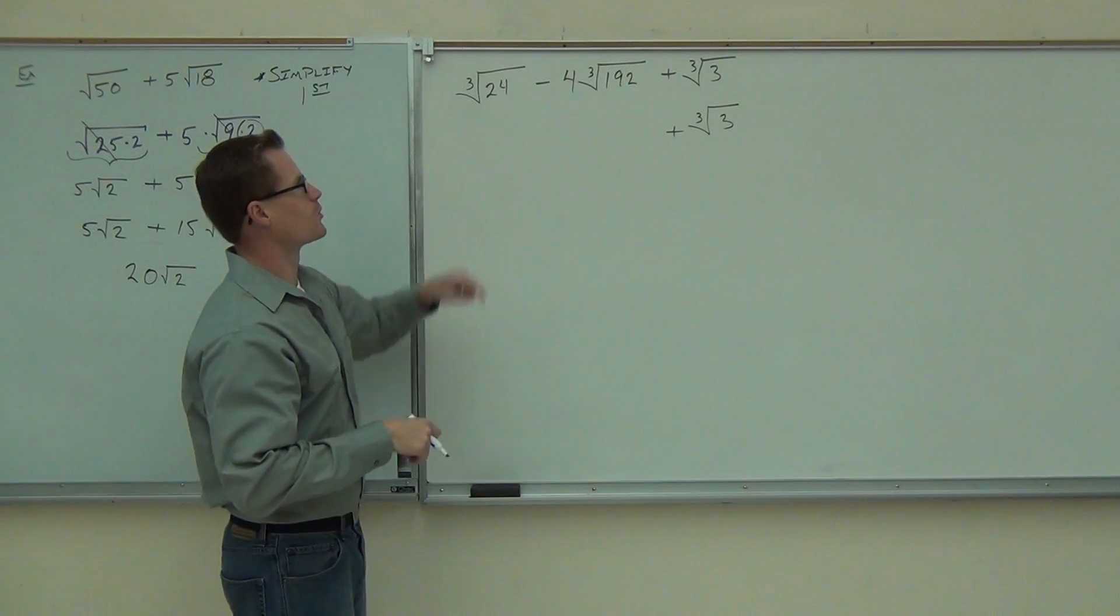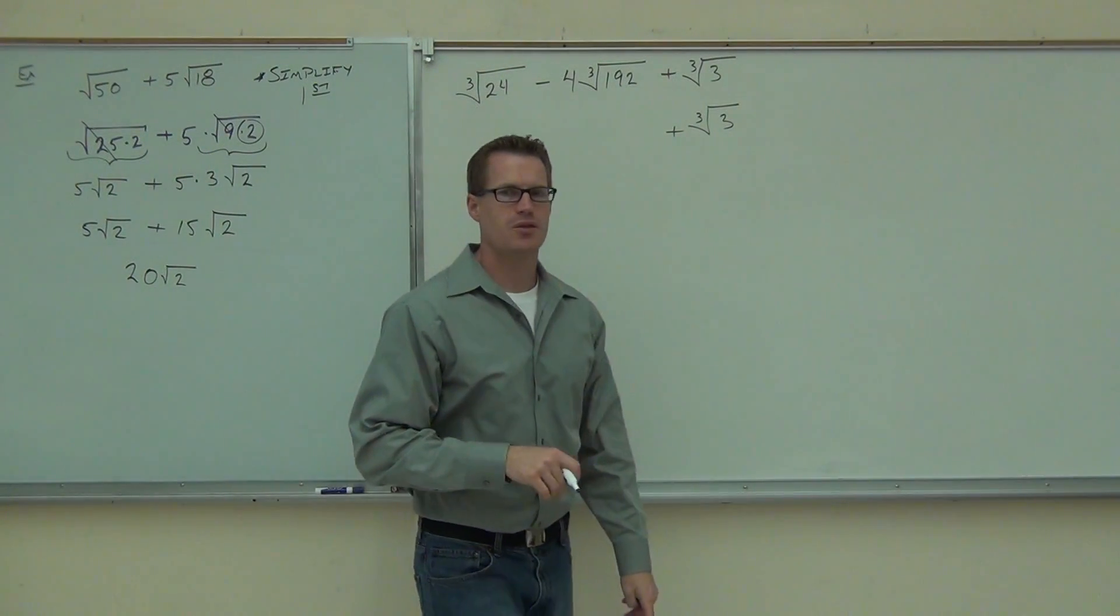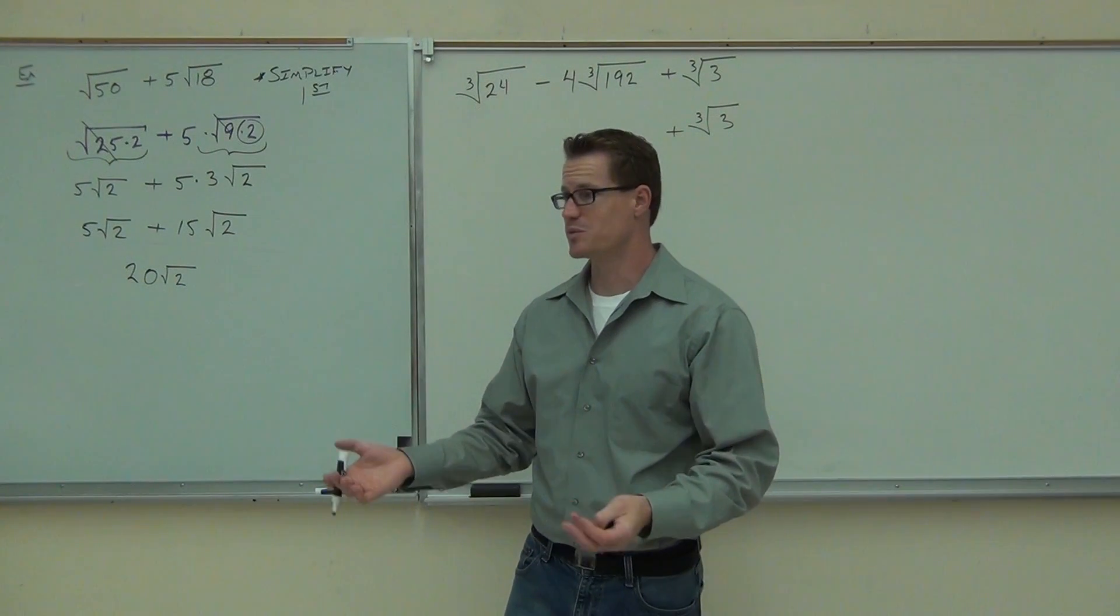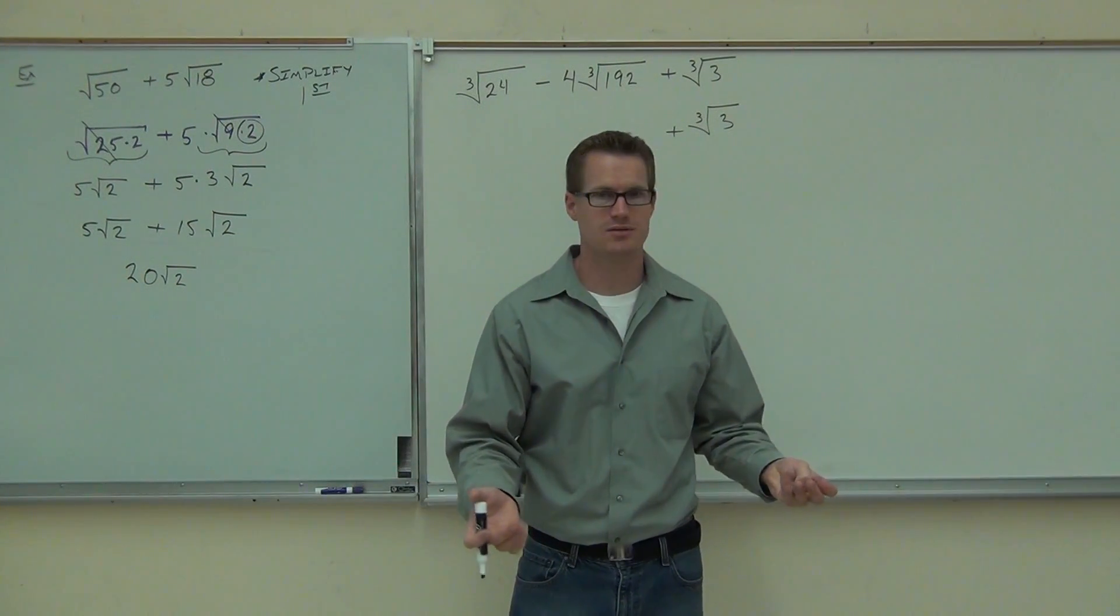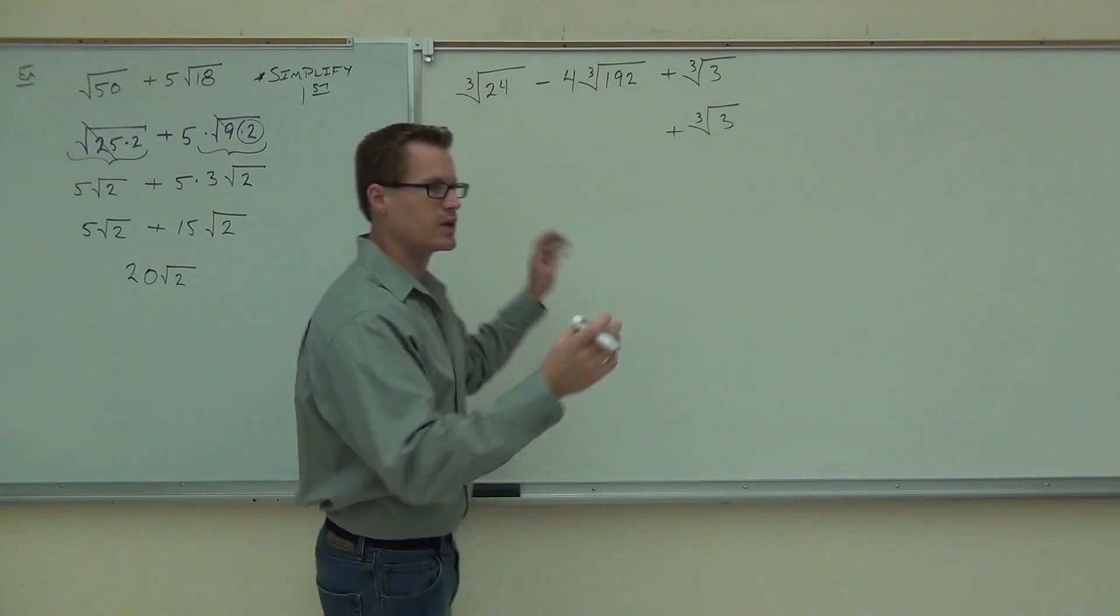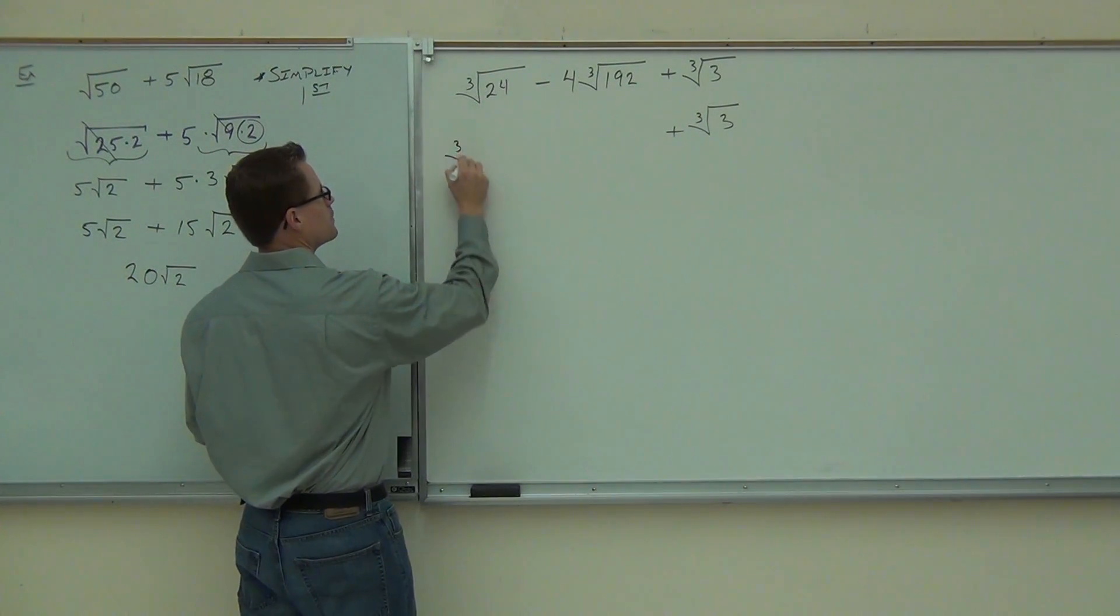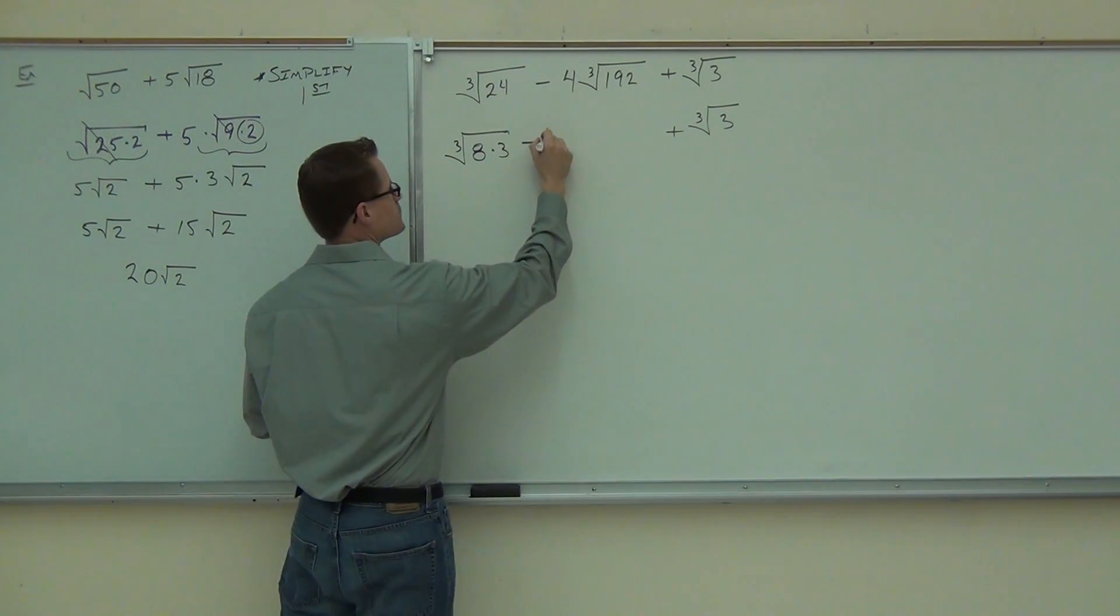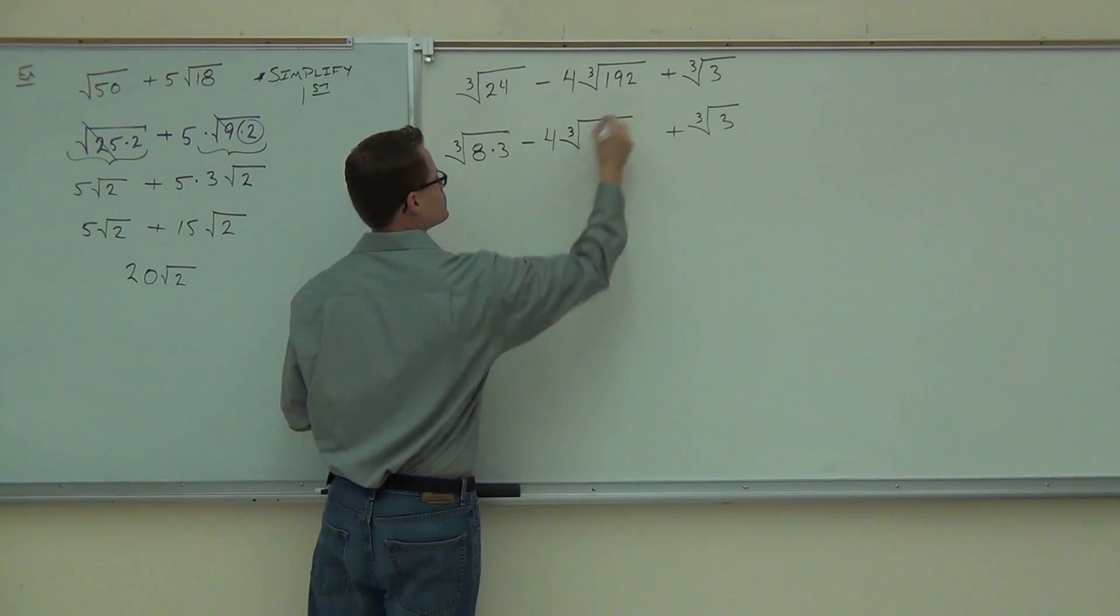Let's work on this cube root of 24 next. Can you think of a perfect cube that goes into 24? 8, 64. Two of those are bigger, so only 8 would help us here. I know it's 8 times 3. Minus 4 and then a cube, oh my gosh, 192.